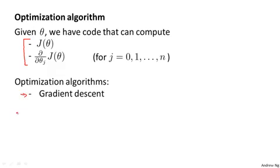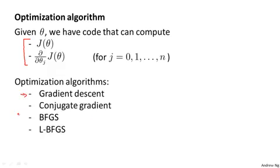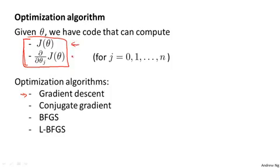But gradient descent isn't the only algorithm we can use. There are other algorithms — more advanced, more sophisticated ones — that if we only provide them a way to compute these two things, use different approaches to optimize the cost function for us. Conjugate gradient, BFGS, and L-BFGS are examples of more sophisticated optimization algorithms that need a way to compute J of theta and need a way to compute the derivatives, and can then use more sophisticated strategies than gradient descent to minimize the cost function.